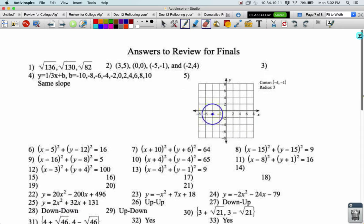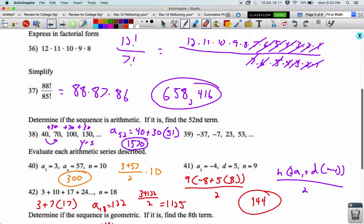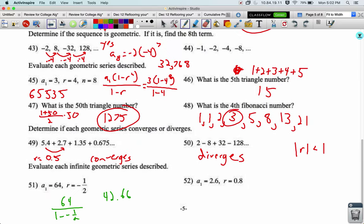It keeps it as 128 over 3, but 128 divided by 3 is still 42.66, so it's the same answer.